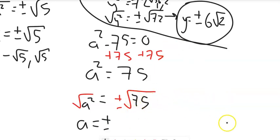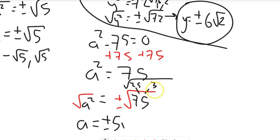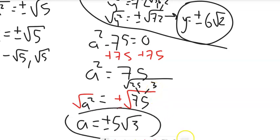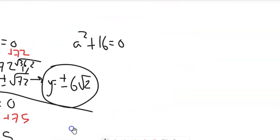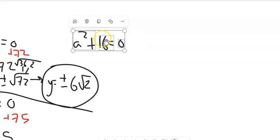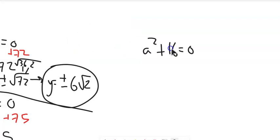Square root of 25 is 5, square root of 3 stays. So the answer is plus or minus 5 root 3. Again, plug it back in if you're not sure it works. It's a good idea to check your answers — it's easy when you have a calculator.